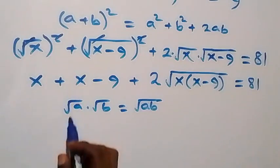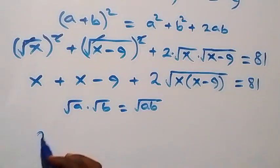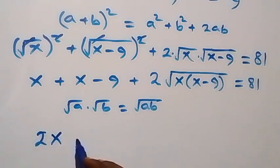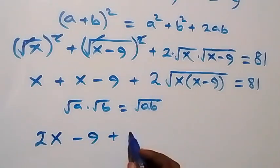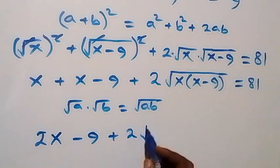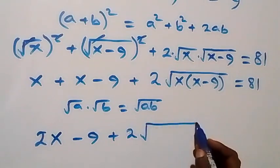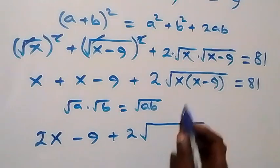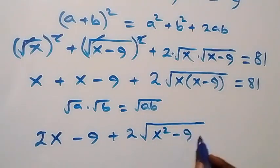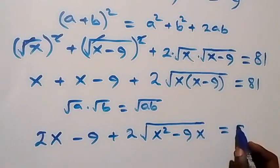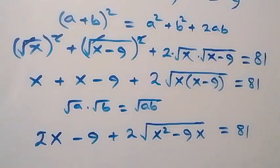From here, when we simplify further: x plus x gives us 2x, then we have minus 9, then plus 2 multiplied by square root of x times (x minus 9) — expanding inside gives x squared minus 9x — now equals to 81.